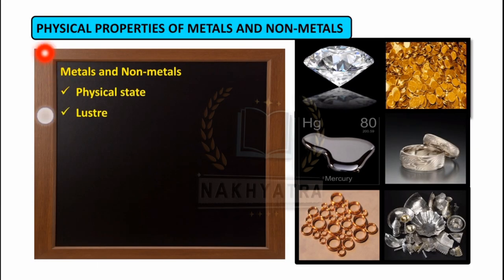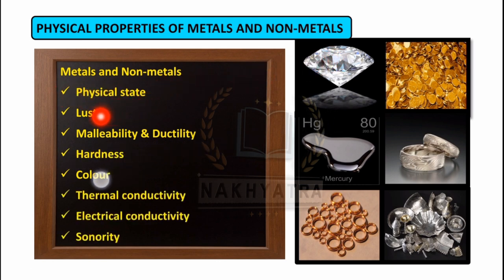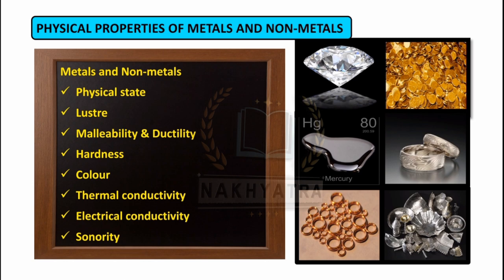Now we will see the physical properties of metals and non-metals. They are: physical state, lustre, malleability and ductility, hardness, color, thermal conductivity, electrical conductivity, and sonority. These are the physical properties of metals and non-metals, and we are going to study each one by one.